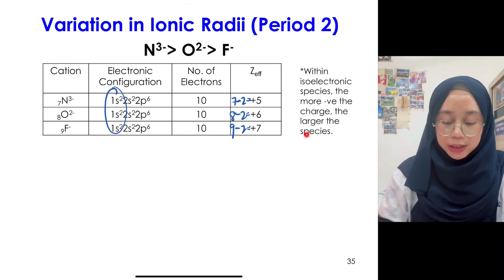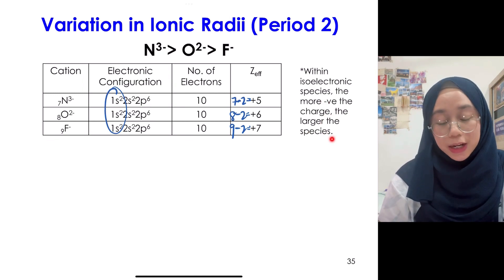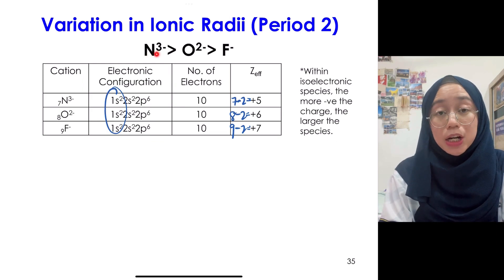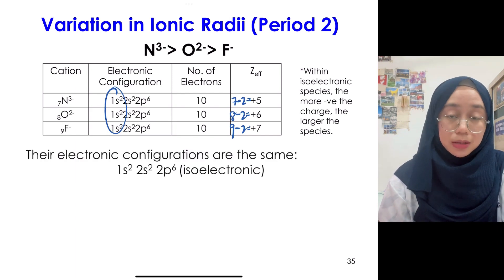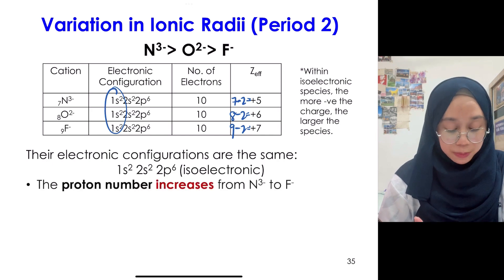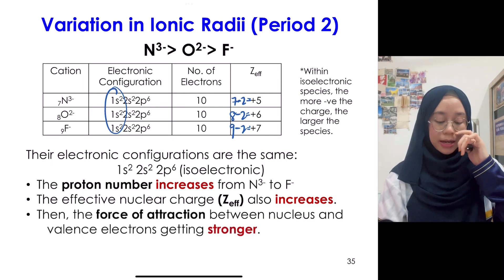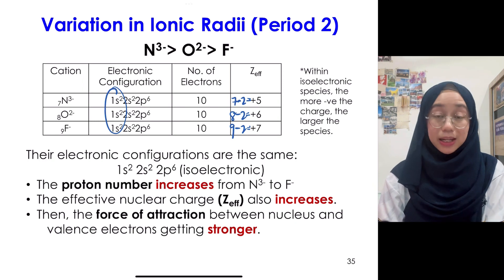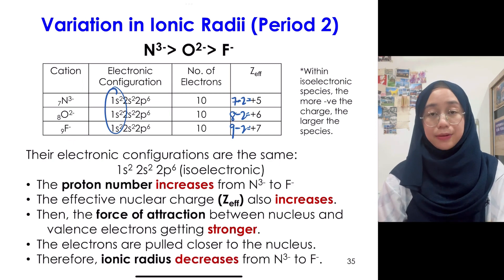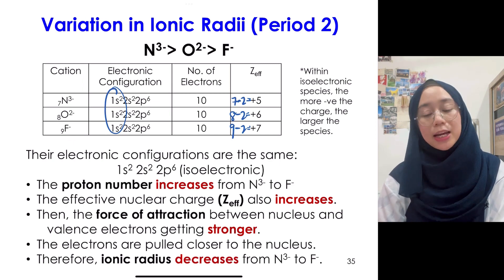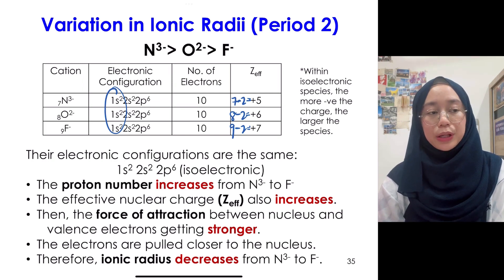Within isoelectronic species, the more negative the charge, the larger the species. The electronic configuration is the same — 1s² 2s² 2p⁶ — meaning they are isoelectronic. The proton number increases from N³⁻ to F⁻, so effective nuclear charge also increases, the force of attraction between nucleus and valence electrons becomes stronger, electrons are pulled closer to the nucleus, and therefore ionic radius decreases from N³⁻ to F⁻.